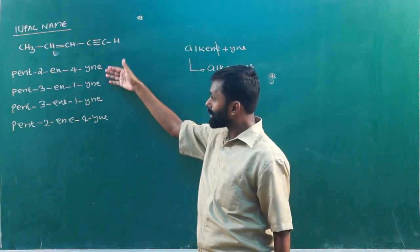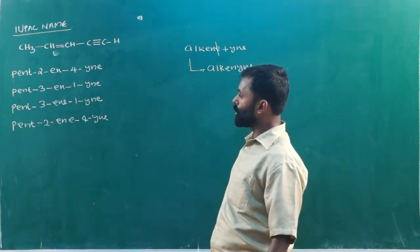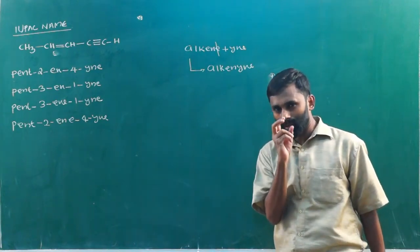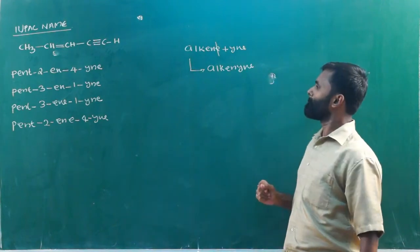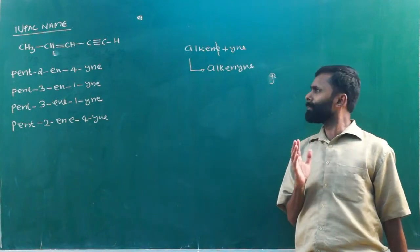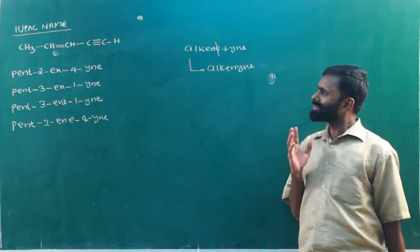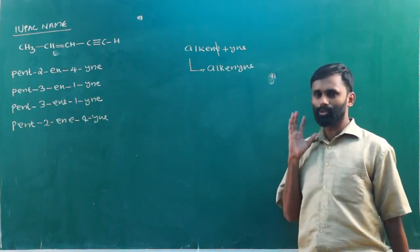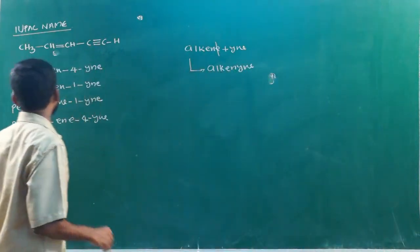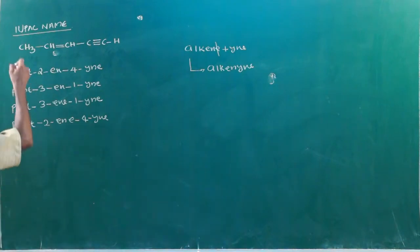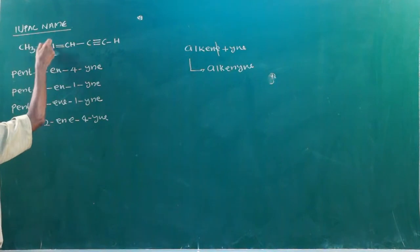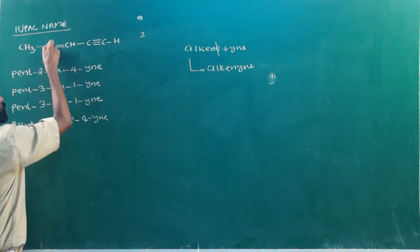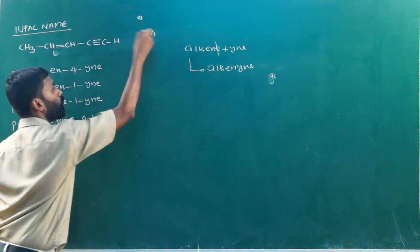So the two options are: pent-2-en-4-yne, or pent-3-en-1-yne. We will name the compound with the double bond and triple bond. Let's get to point number one. We will start numbering: double bond at 2, then 3, 4, giving us 2,4 in one direction, or 3,4 in another.